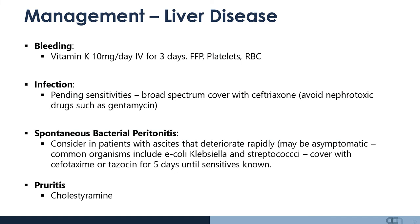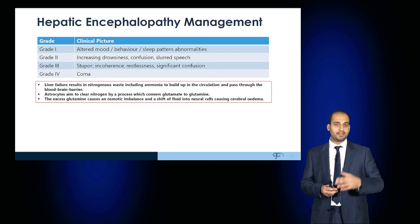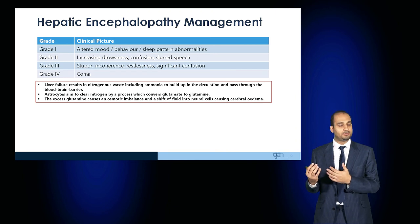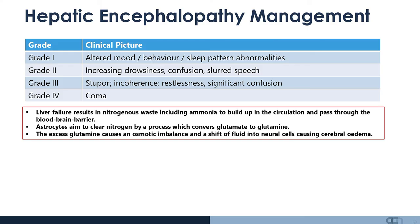Pruritus can be treated by cholestyramine. If the patient develops encephalopathy — Grade 1 is altered mood, behaviour and sleep pattern; Grade 2 is drowsiness, confusion, and slurred speech; Grade 3 is incoherence, stupor, and restlessness; Grade 4 is coma — this occurs due to high levels of nitrogenous waste and ammonia crossing the blood-brain barrier. Astrocytes try to clear the excess nitrogen by converting glutamate to glutamine, but the excess glutamine causes an osmotic imbalance, shifting fluid into neural cells and leading to cerebral oedema.